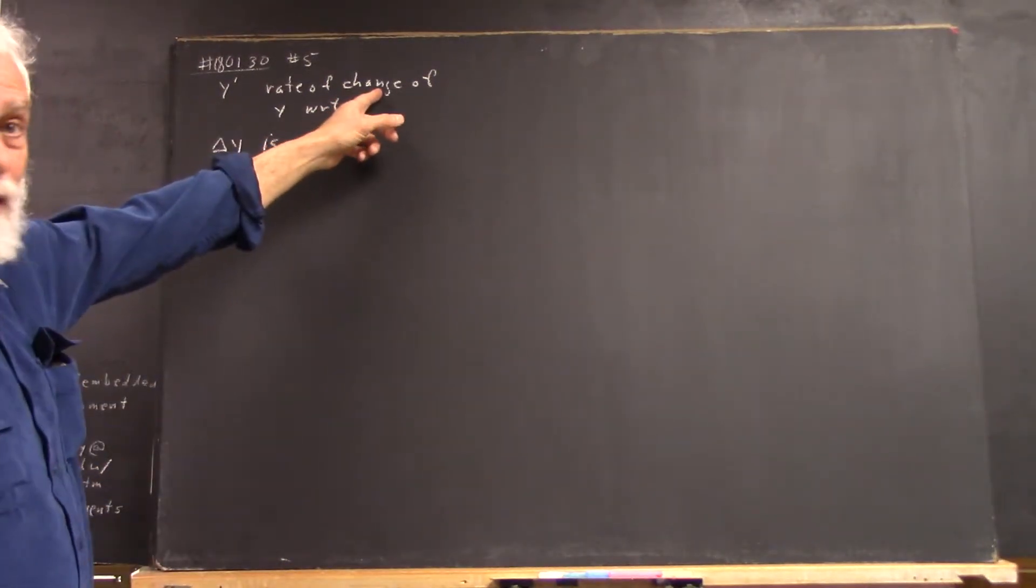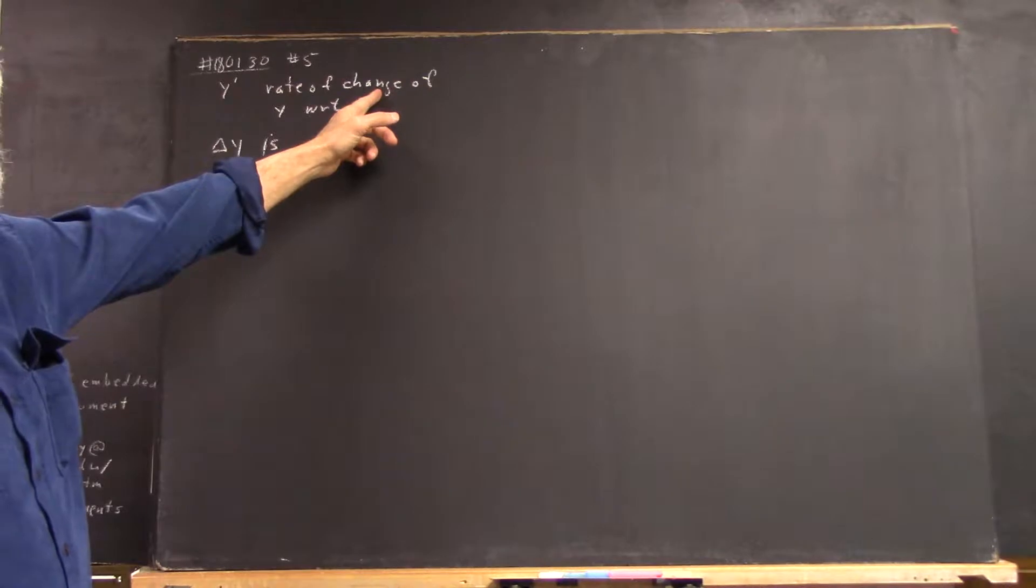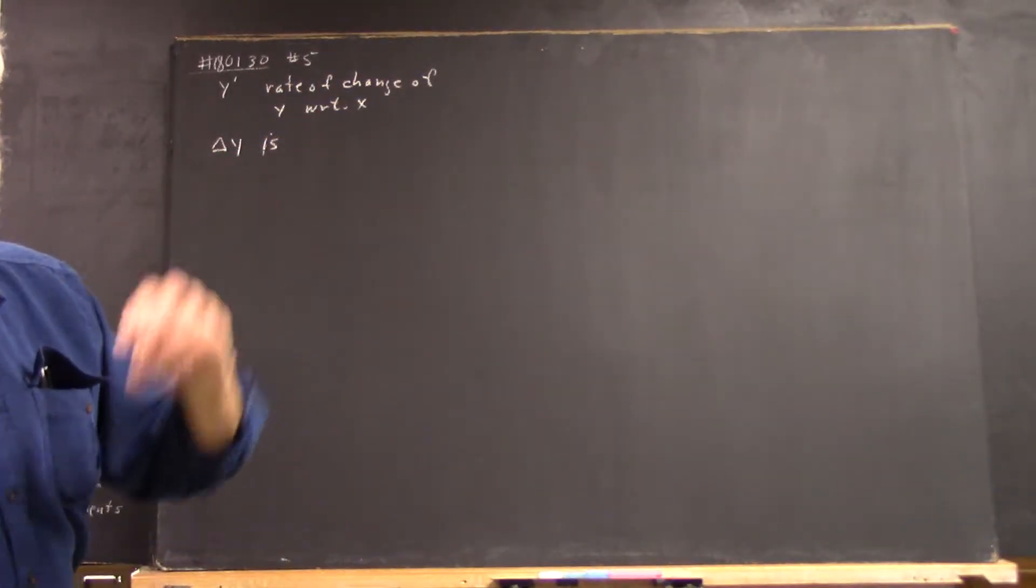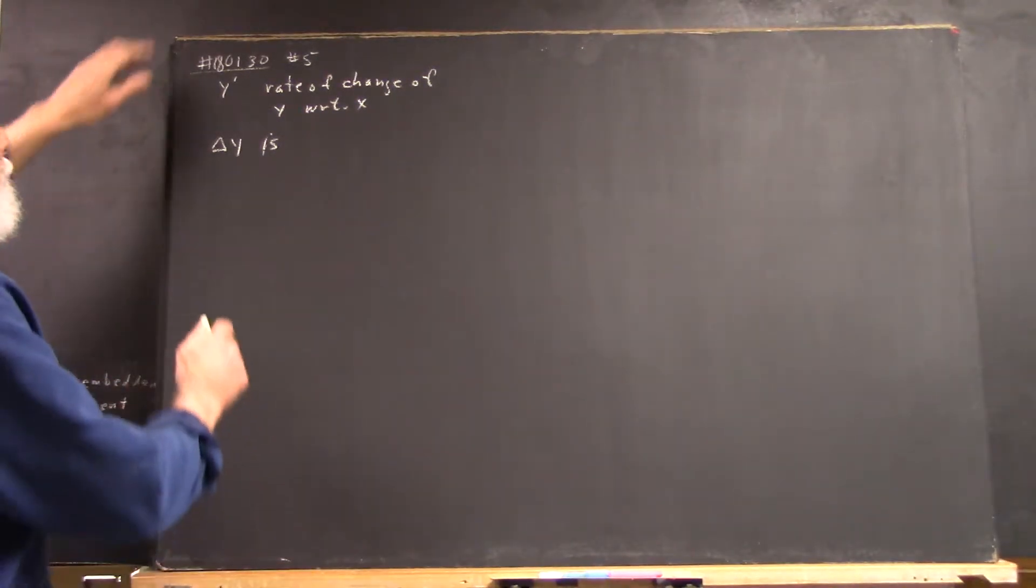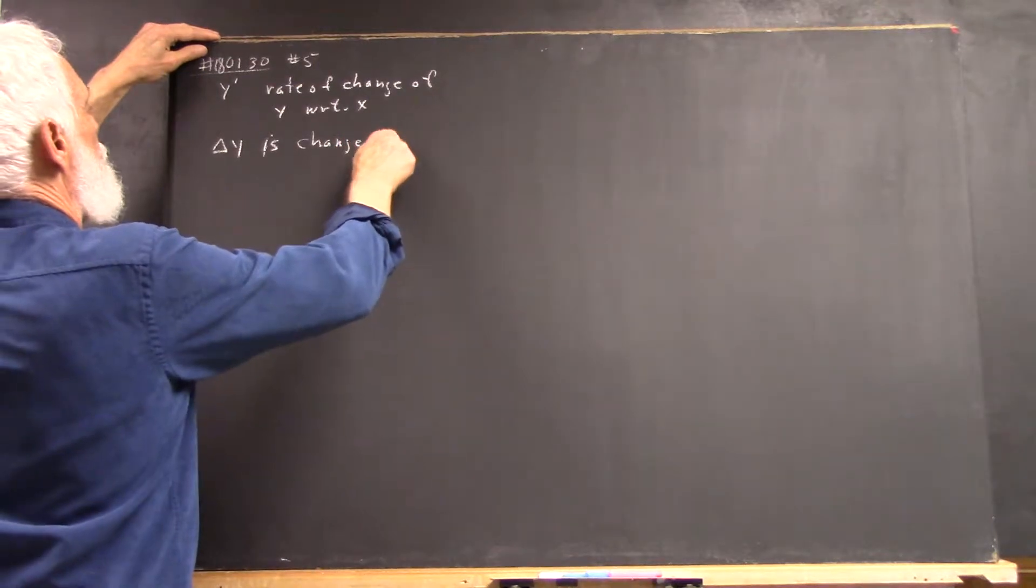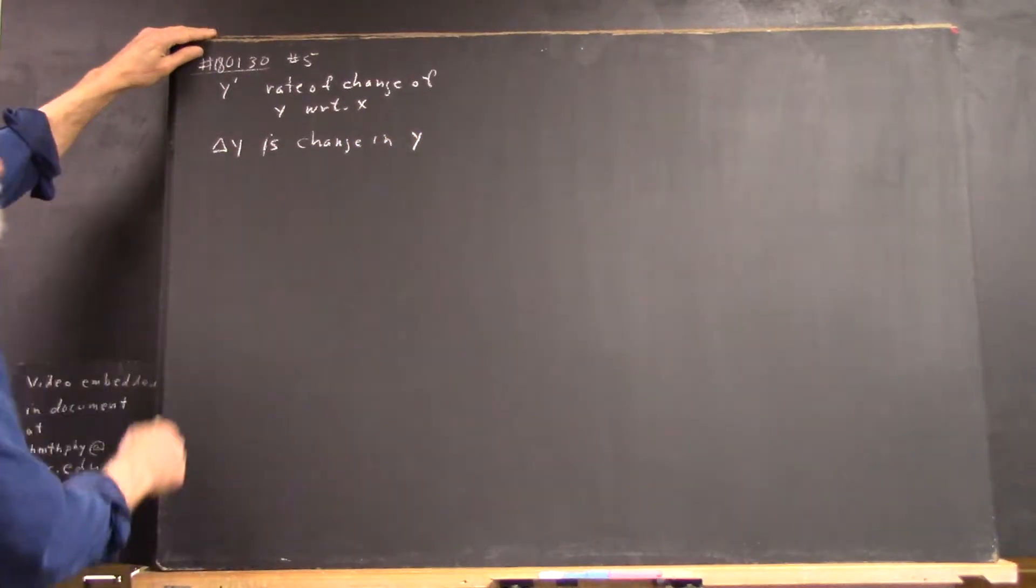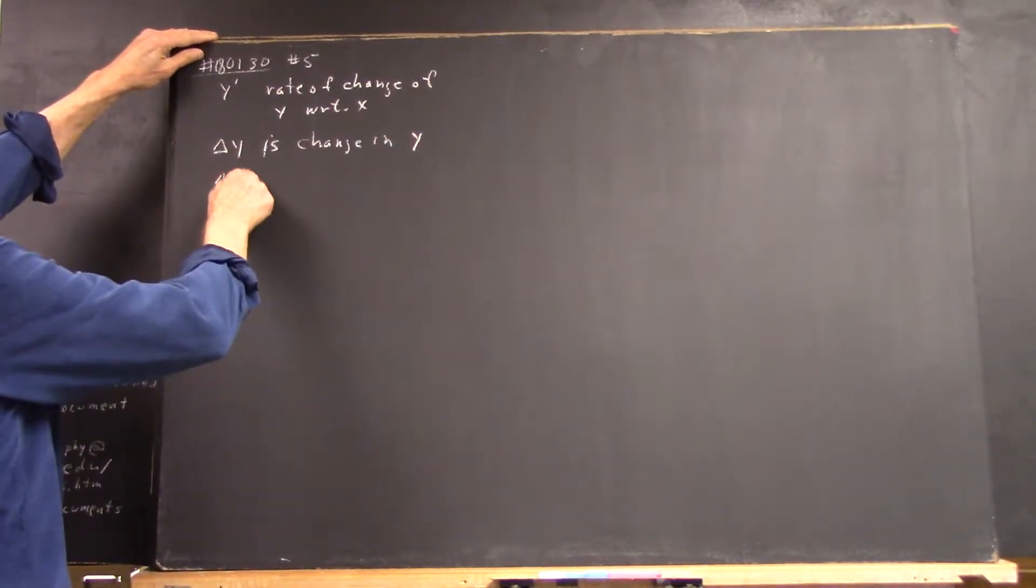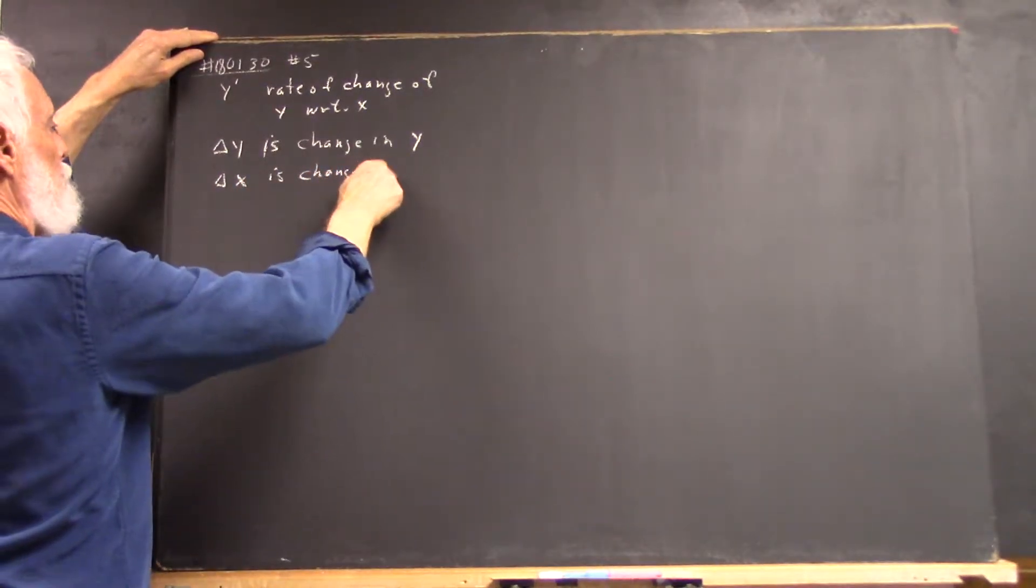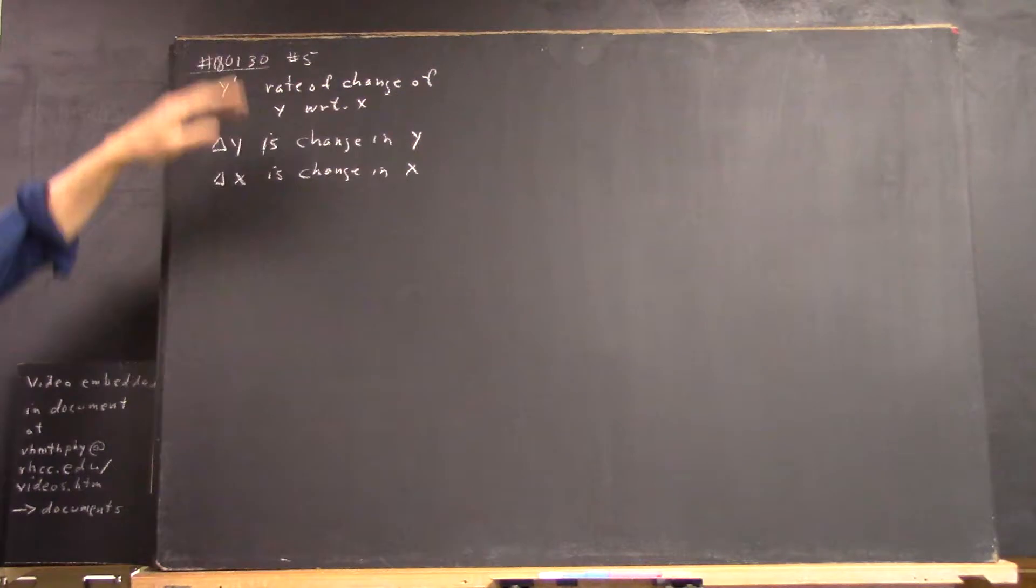So the important word is not just change, although that's a very important word, it's the whole phrase, right? The rate of change and the change are two different things. And delta x is the change in x. Make sense?